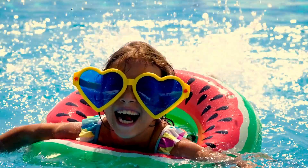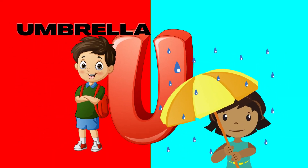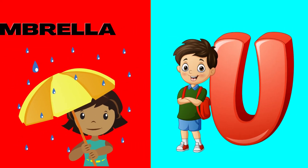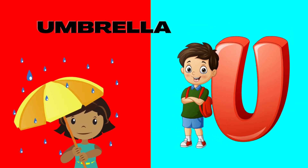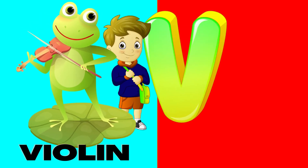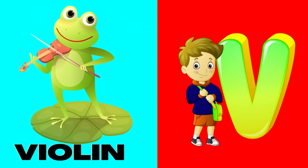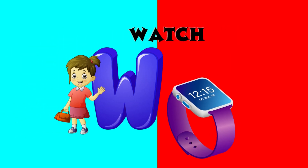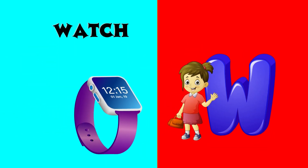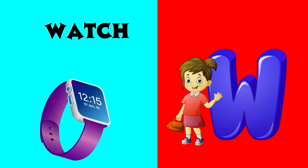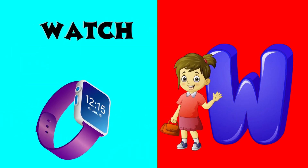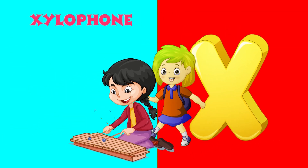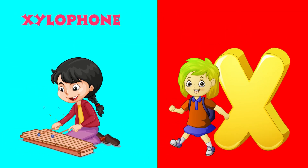U is for umbrella, u-u-umbrella. V is for violin, v-v-violin. W is for watch, w-w-watch.